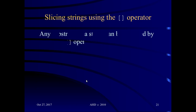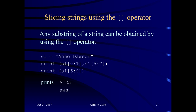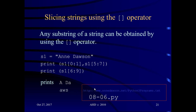As with lists, we can also slice strings using the bracket operator. Here we have a slice using the range from 0 colon 1 — the last index is always 1 less than the second index, so this accesses index 0, which is the letter A. A slice from 5 to 7 gives the letters at index 5 and 6. Printing from index 6 to 8 gives the characters at 6 and 7. The space is a character too — counting 0, 1, 2, 3, 4, 5, 6, 7 gives 'AWS'. This is program 08-06.